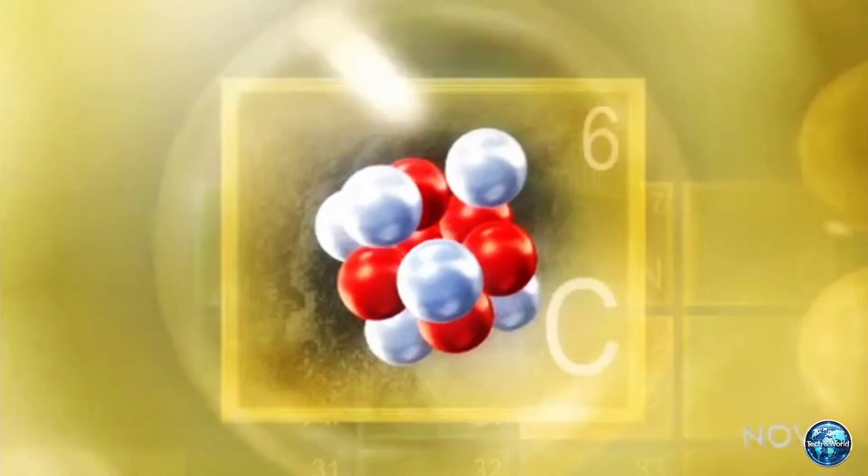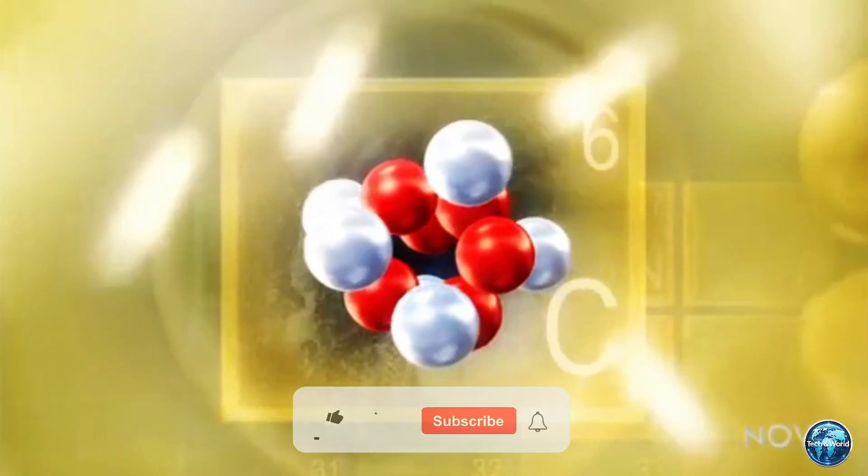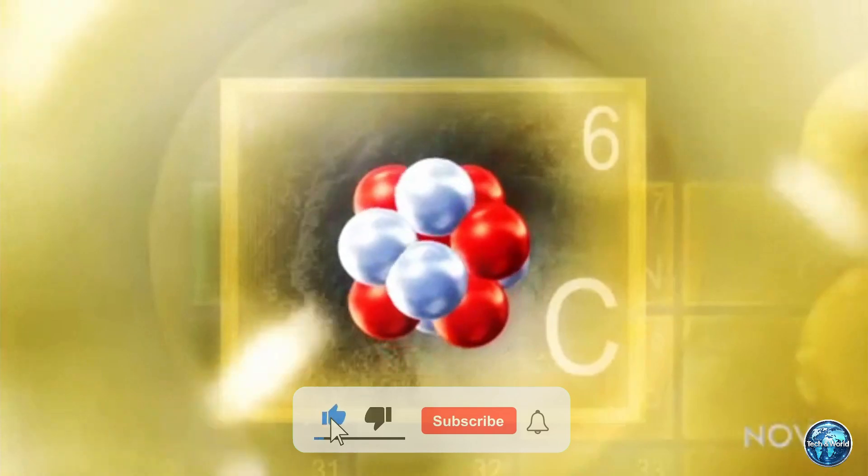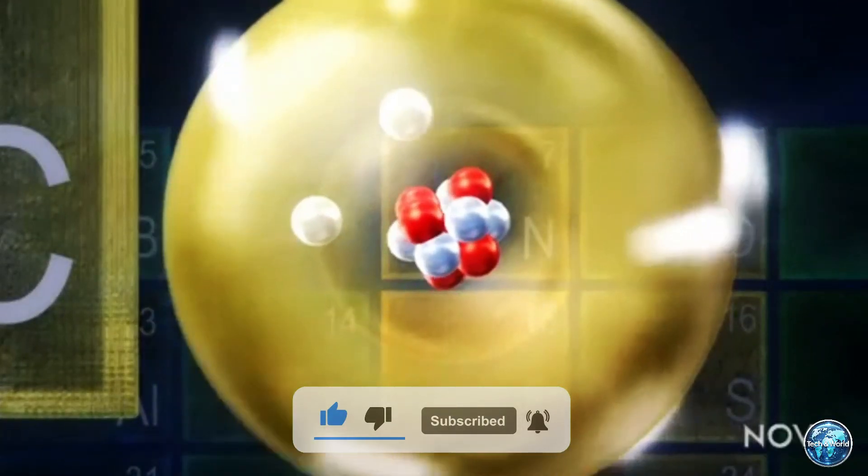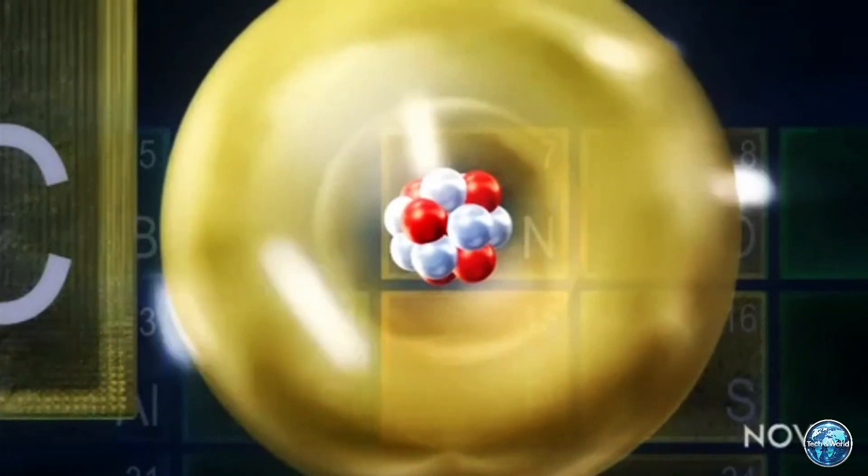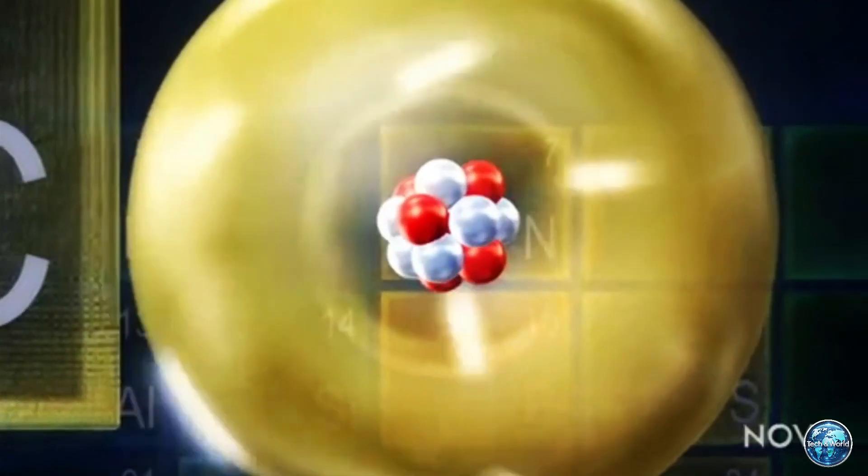Their work focuses on turning nuclear waste into a sustainable energy source. Let's talk about how it generates energy. Carbon-14 is a radioactive isotope that emits tiny particles called beta particles when it decays. Think of beta particles as super-tiny energy bullets.